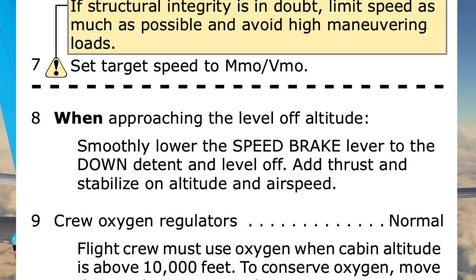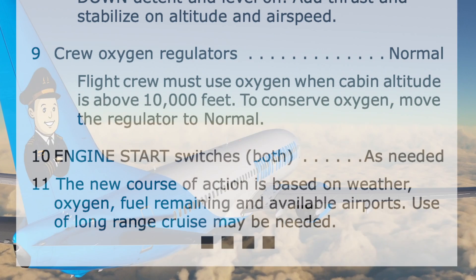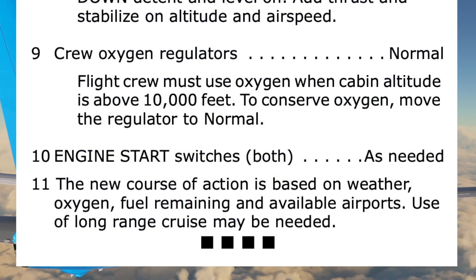As we approach level-off altitude, the speed brake is moved to the down position and thrust is increased. The remaining non-normal checklist items can be completed.